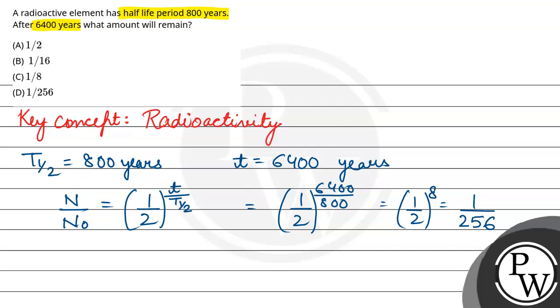So this is what we needed to find - how much undecayed amount will remain. The undecayed amount is N by N0, which comes out to be 1 by 256. So the final answer is option D, 1 by 256. Hope you understood it well, best of luck.